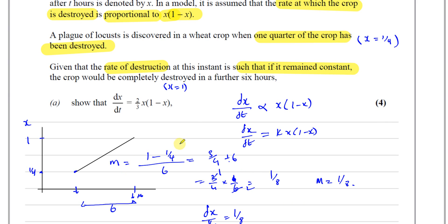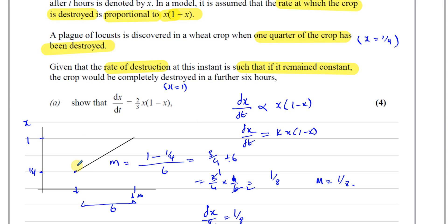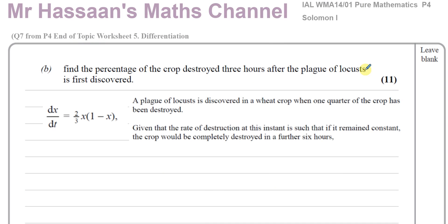That's four marks. Supposing you didn't get part A — it's quite possible some students wouldn't have thought of that; it's not a normal type of question. But part B is worth 11 marks. If you can't do part A of a question, never just give up. Part B is actually just solving a simple differential equation. They told us k is 2/3 — we had to show it. If you couldn't do that, we can still use this, salvage 11 marks, and just lose 4 out of 15 instead of 15 out of 15.